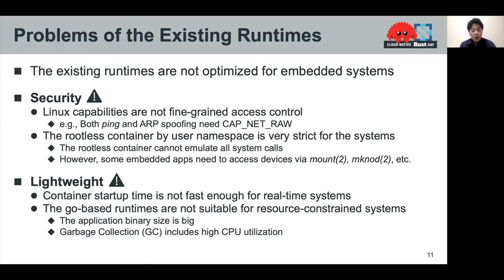First, in terms of security, Linux capabilities are not fine-grained access control. When a user wants to use a ping command, the user needs to have the CAP_NET_RAW capability. However, CAP_NET_RAW also allows users to run IP spoofing attacks. Second, the rootless container via user namespace is very restrictive for the systems. The user namespace allows containers that are unprivileged outside the namespace to have root privileges while limiting the scope of that privilege to the namespace. However, the rootless container cannot emulate all system calls because containers in the user namespace cannot manipulate global resources in the system. In the case of embedded systems, this is a problem because some embedded applications need to access devices via system calls such as mount.